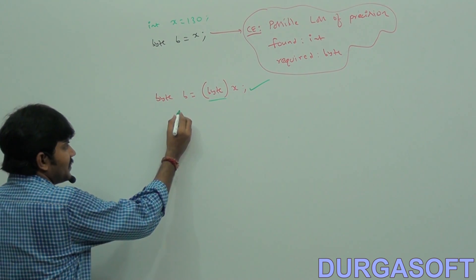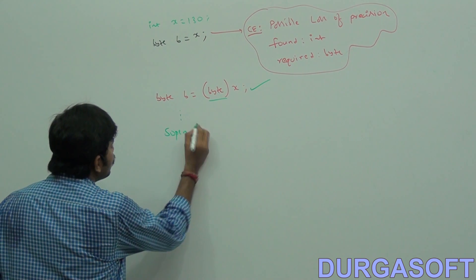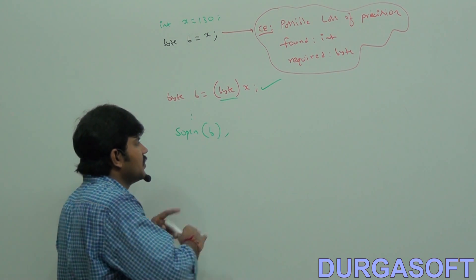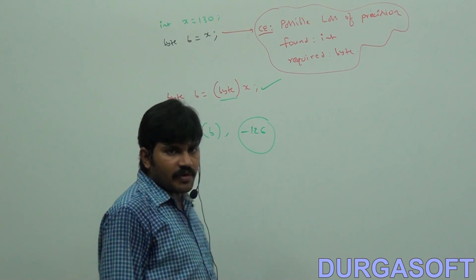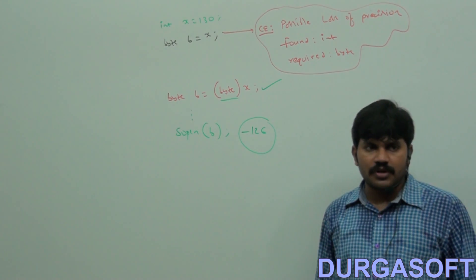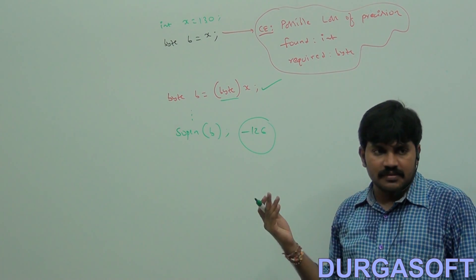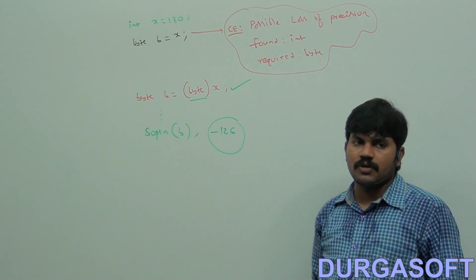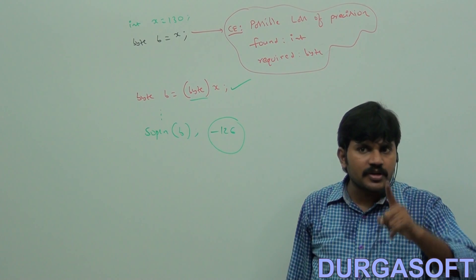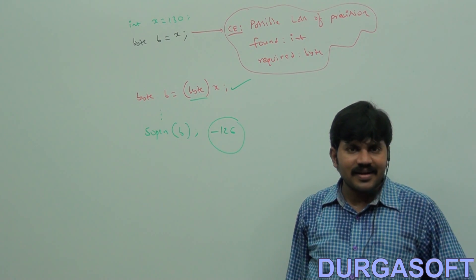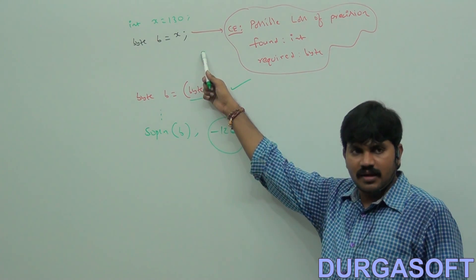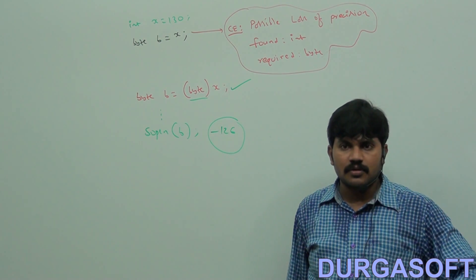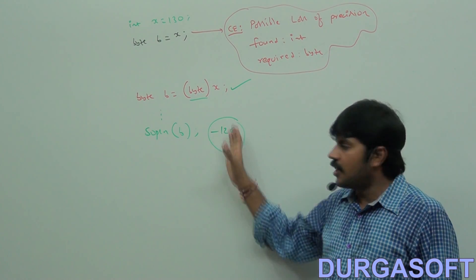Now I am trying to print SOP of b. What output will I get by default? Minus 126 is the value I am going to get. The programmer will get a shock because the value assigned was 130 — and now it became minus 126. The compiler told us there may be a chance of loss of information, but the programmer said 'I can handle it.'